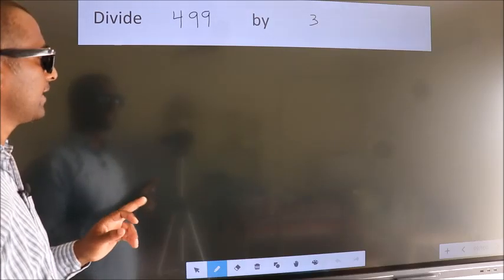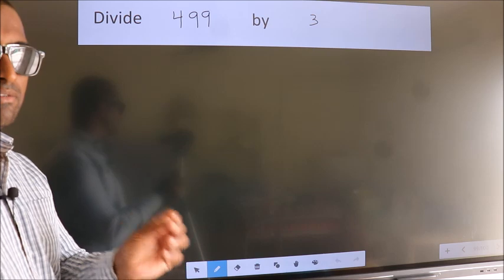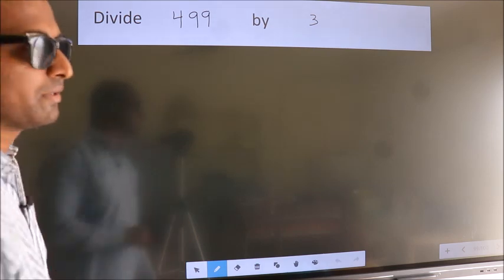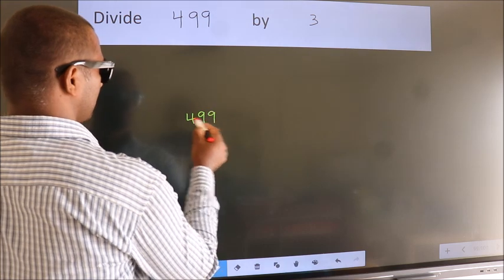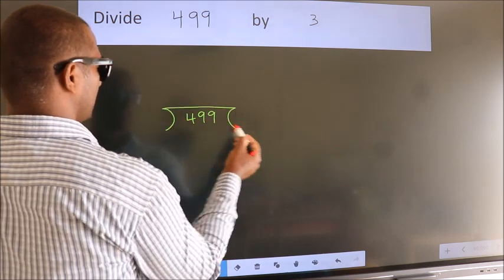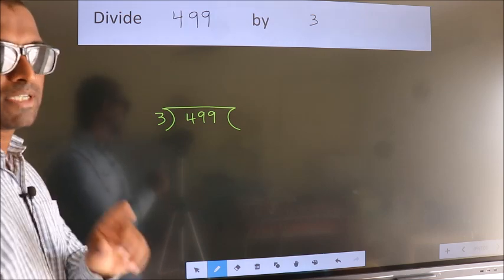Divide 499 by 3. To do this division, we should frame it in this way: 499 here, 3 here. This is your step 1.